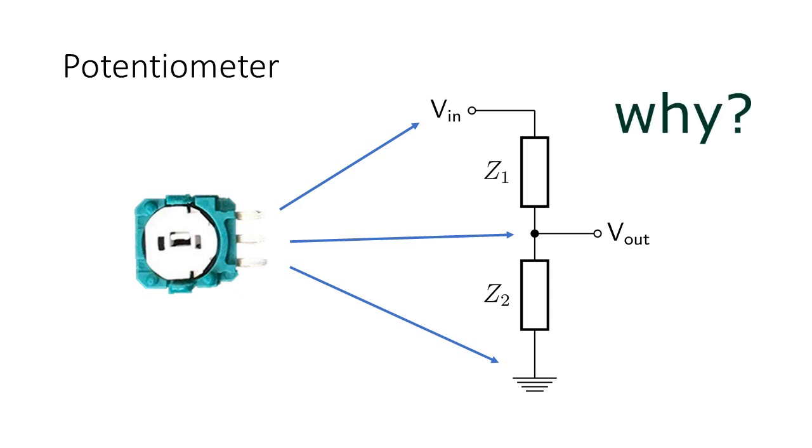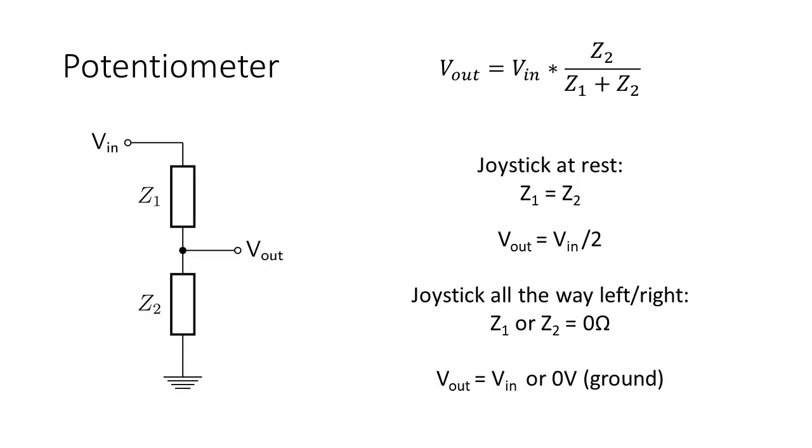Why they use potentiometers in these kinds of joysticks becomes clear when the basics of voltage dividers is known. Every potentiometer is also a voltage divider where the output voltage is dependent on the values of Z1 and Z2. The general formula is given as Vout equals Vin times Z2 over the sum of Z1 and Z2. There are some general rules of thumb. With the joystick at rest Z1 is as big as Z2 which simply makes the output voltage half the input voltage.